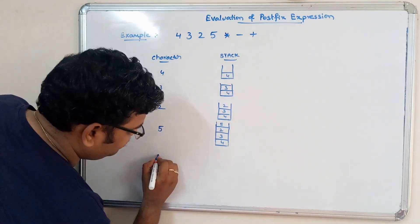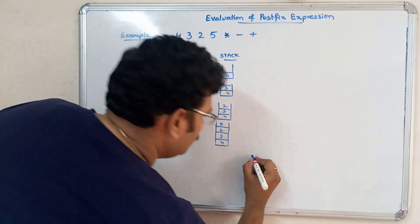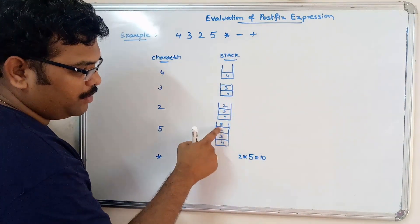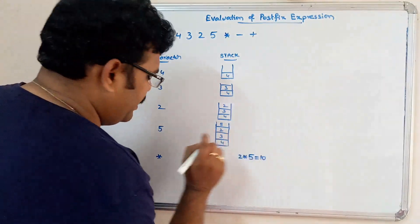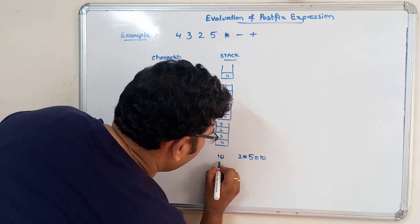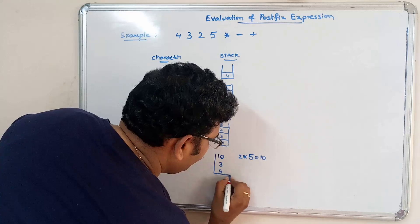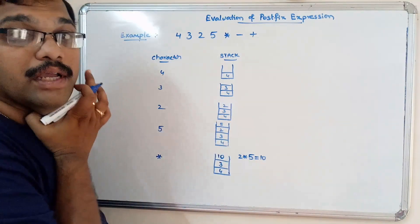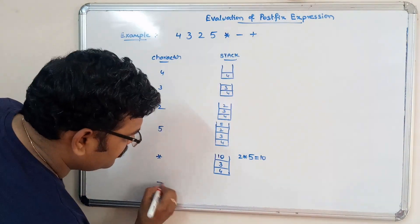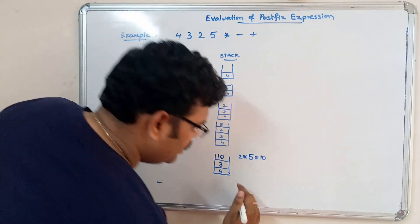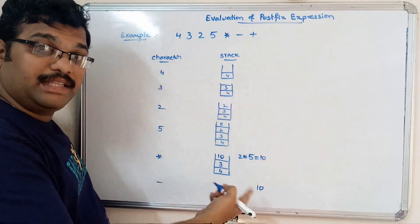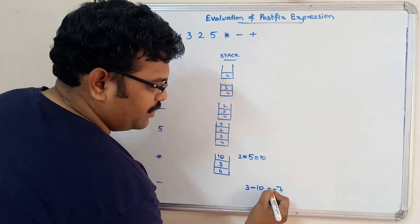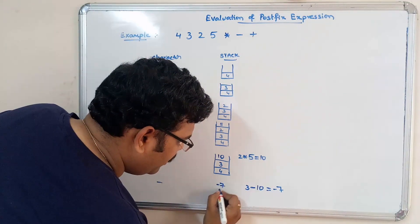Next is star (multiply). Pop 5, pop 2, place 2 on the left: 2 × 5 = 10. Push 10 back. Stack is now: 4, 3, 10. Next is minus. Pop 10, pop 3, place 3 on the left: 3 − 10 = −7. Push −7 back. Stack is now: 4 and −7.